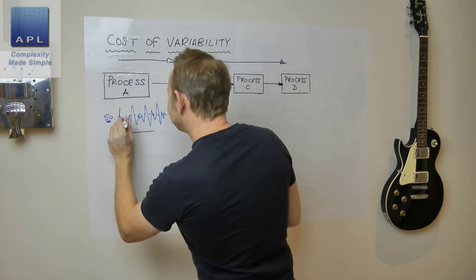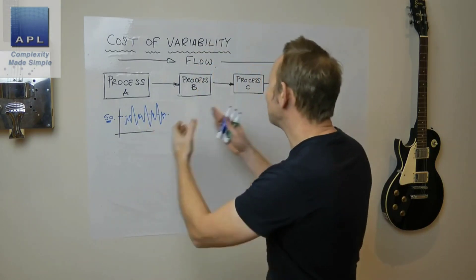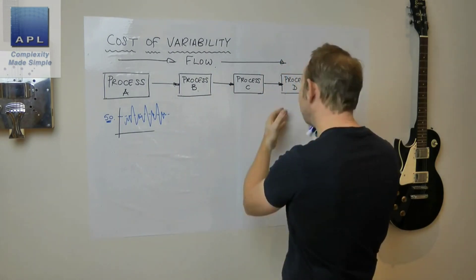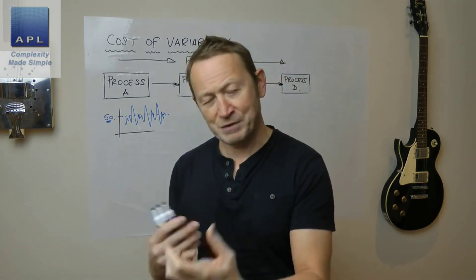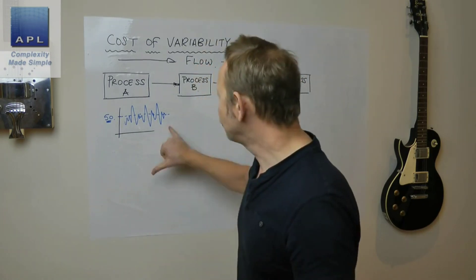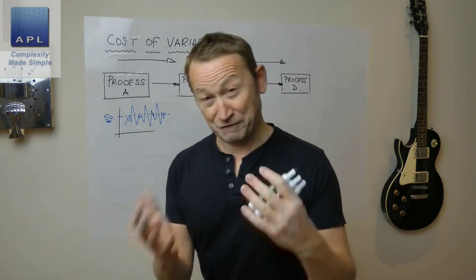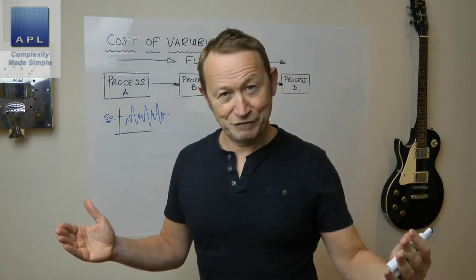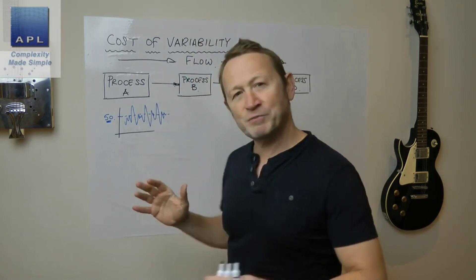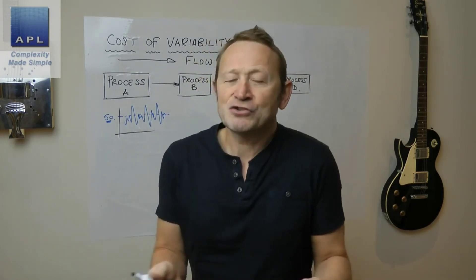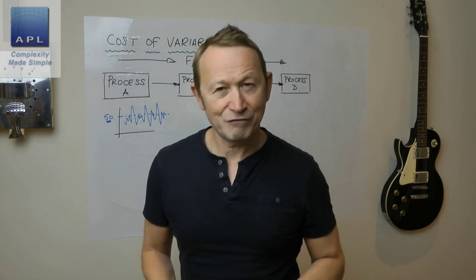Nobody hits 50, 50, 50 consistently — that would be the perfect process. What you actually have is a process that varies, and on average process A hits 50. Process B might have a similar pattern, process C, process D. These numbers vary because the machine doesn't run effectively — it could be maintenance related, engineering related, or quality related. You might have made 65 units but 15 were scrap, so you still made 50; or you made 50 units and 15 were scrap and you only made 35. It's having an effect on the consistency of the output.